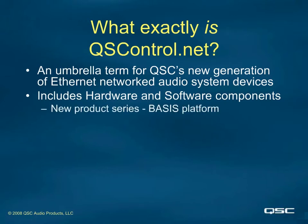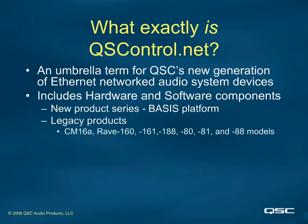It includes our new Basis product platform, which will be described in more detail in a moment. But it also includes our legacy products, such as our CM16A and our legacy RAV units. It even includes the amplifiers, the loudspeakers, any network cabling, and the Ethernet switches. QuesControl.net doesn't make all of the pieces and parts, such as the Cat5 cables and switches, but these are considered part of the QuesControl.net architecture.